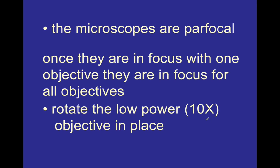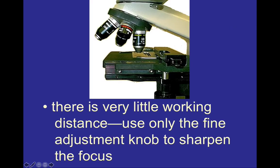There is another concept about microscopes that makes it much easier to stay focused when changing between objective lenses, and that is the word parfocal. Parfocal means that when one objective lens is in focus, all of the objective lenses are roughly in focus as well. So once you get the stage in the right spot for the scanning objective lens, you'll be just about in the right spot for the low power and high power objectives, and you will only need to make minor changes with the fine adjustment knob.